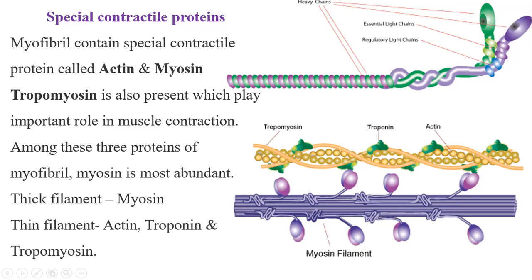Actin and myosin are absolutely essential for contraction. Tropomyosin plays an important role in sensitizing the contractile proteins — actin and myosin — to calcium ions. This sensitivity to calcium ions is essential for switching muscle contraction on and off. Whether the muscle contracts or not depends upon the sensitivity of the thin filament to the calcium ion, which is regulated by tropomyosin.